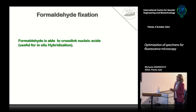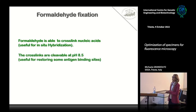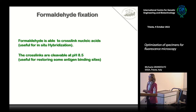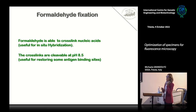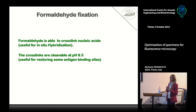Remember that formaldehyde is able to cross-link also nucleic acids, so it is useful for in situ hybridization. Also remember that cross-links are cleavable at pH 8.5 — this could be a useful trick to restore some antigen binding sites. It is a very mild, gentle treatment that you can use if you need an unmasking step in your protocol.